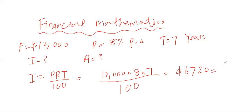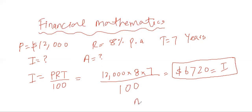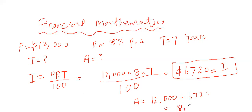So 6,720 is your simple interest — keep the difference between interest and total amount in mind. At the end of seven years, the total amount in your bank is going to be the principal amount of 12,000 plus the interest of 6,720. When you add these two numbers together it gives you 18,720.